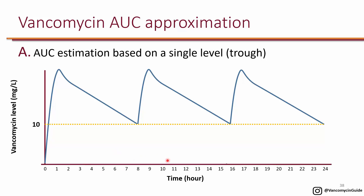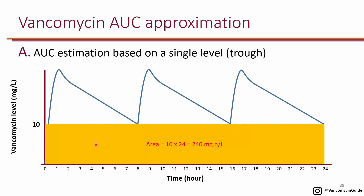Now if you get only a single trough level, the question is: can you estimate the AUC? Because the AUC is the area under the curve, if you have a trough of 10 you can say the level never goes below 10. So you can say the area under the curve is at least 10 times 24, which is 240. You also have all the areas at the top, which we don't know because we don't know what the peak is. So a trough alone only allows you to estimate what the AUC is.